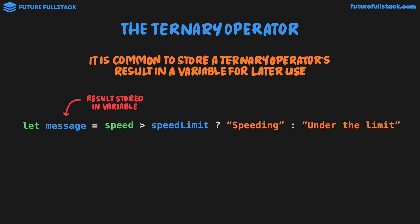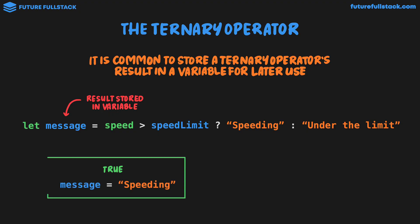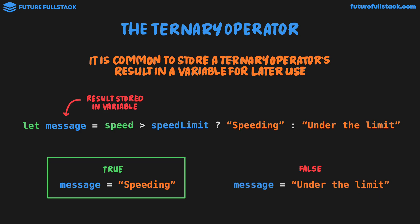For example, if speed is greater than speed limit — that is the true case — we would now have a variable storing the value 'speeding'. If speed is less than speed limit, that would result in false, which means that our message would now contain the string 'under the limit'.